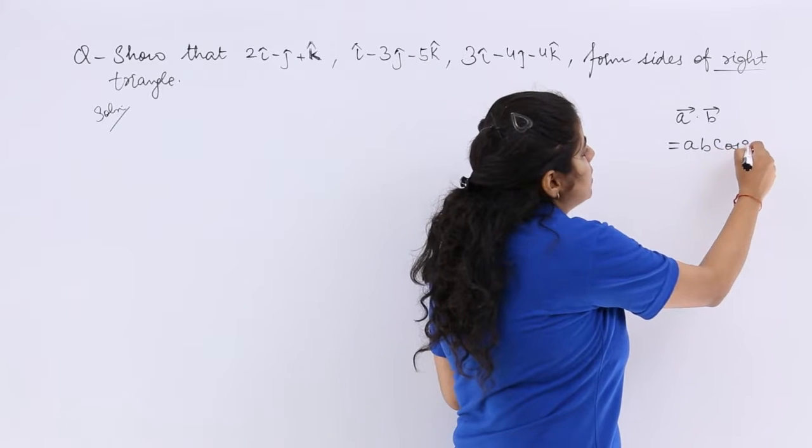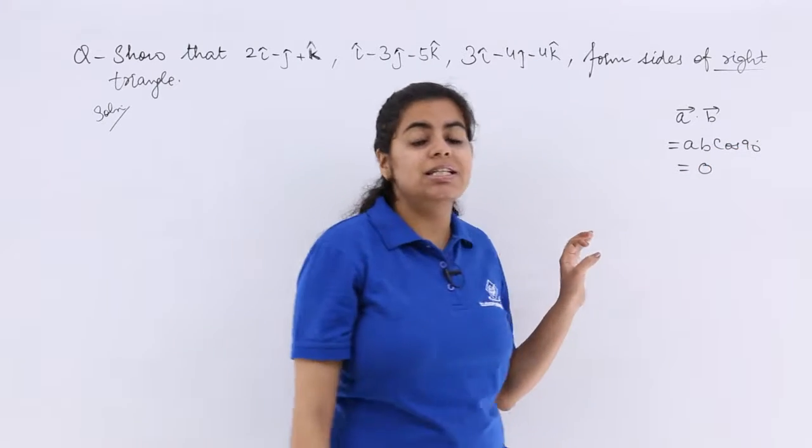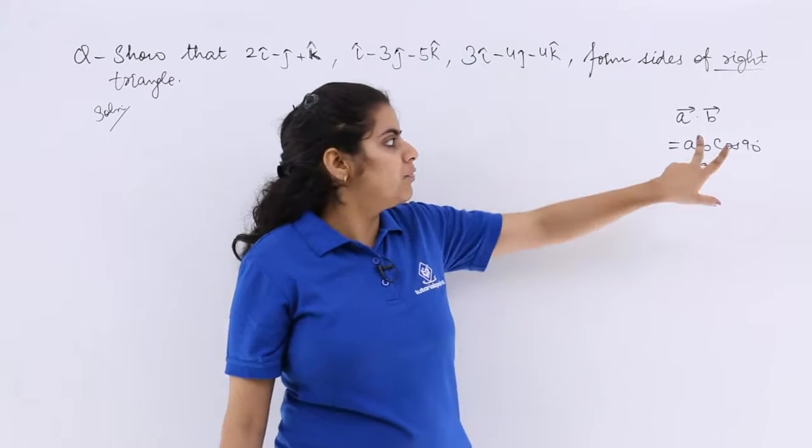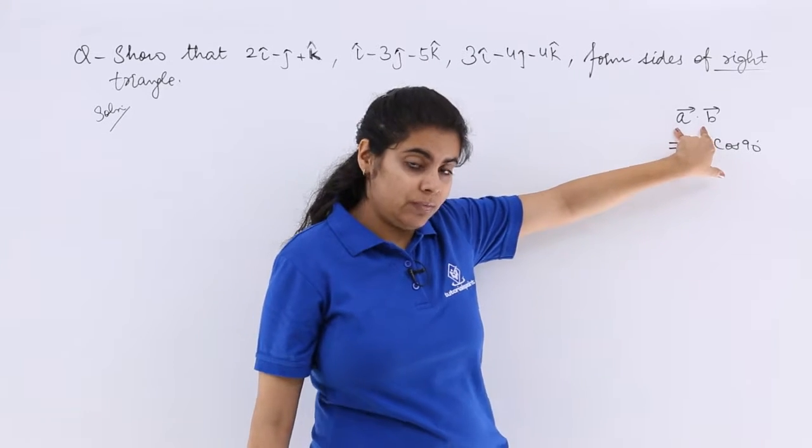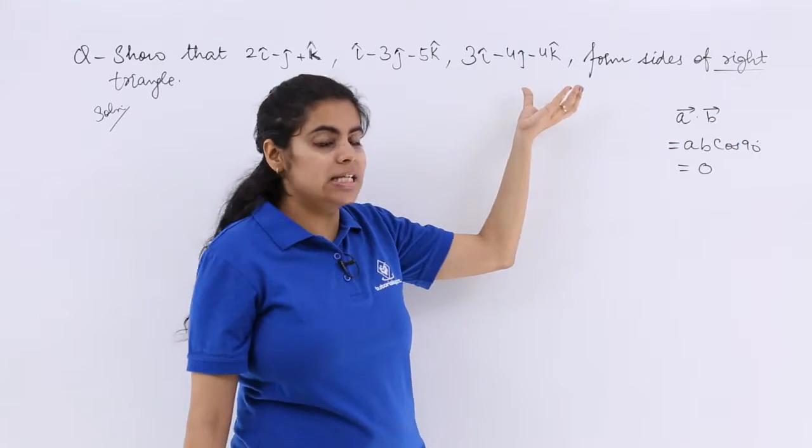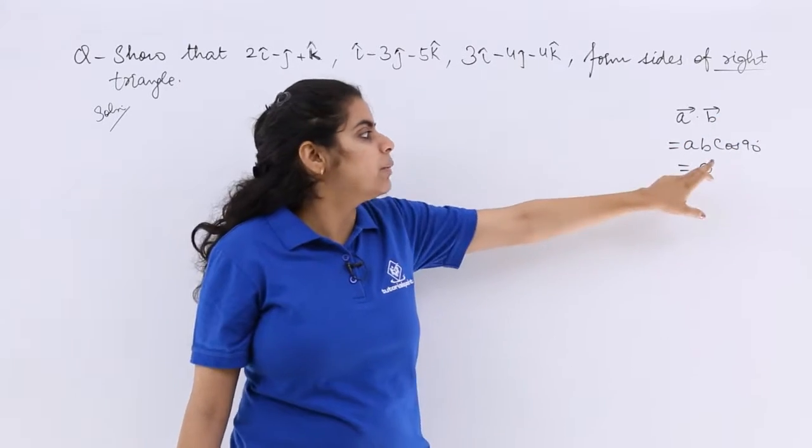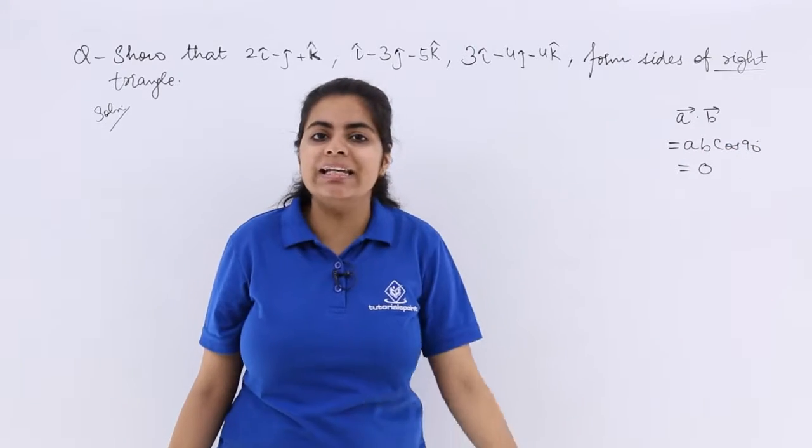AB cos 90 degrees which means 0 because cos 90 is 0. So if any two sides are giving me dot product as 0, when these two vectors and sides probably are not 0, so that means definitely the theta is 90 degrees.